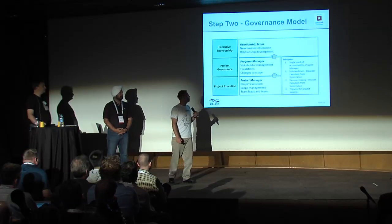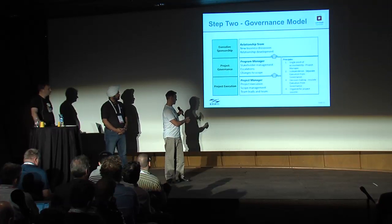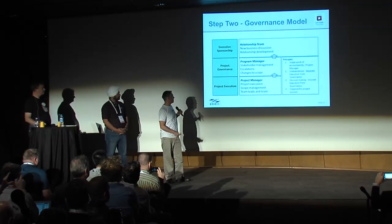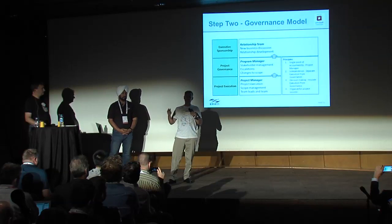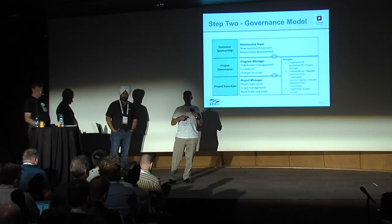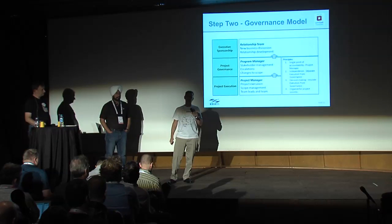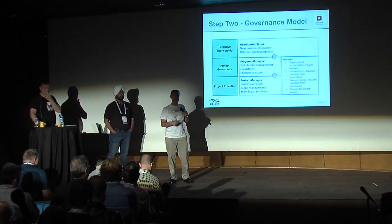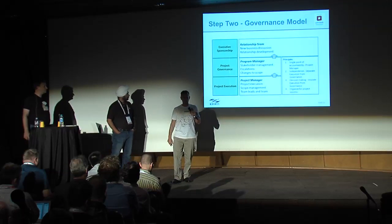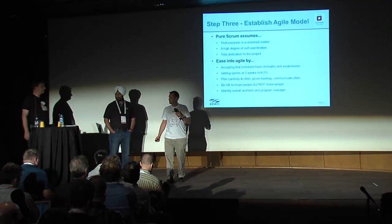Step two is a fairly typical governance model, layered like this: project execution at the bottom and project governance one step up. This separates execution from other issues — escalations, scope creep — that should be pulled out of the project execution path and dealt with at a governance level where stakeholders meet. At the top sits executive sponsorship and, from the vendor side, account management leadership.